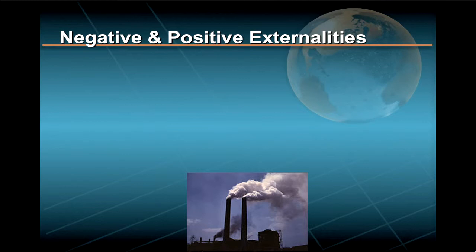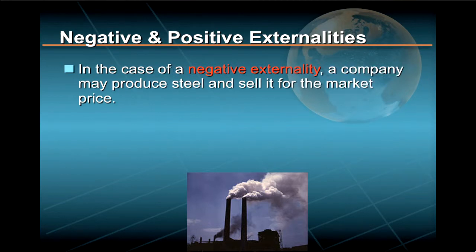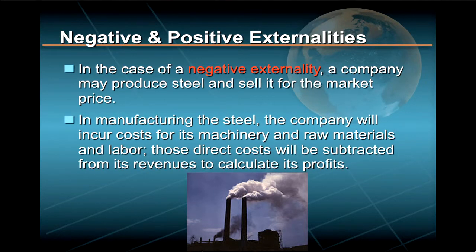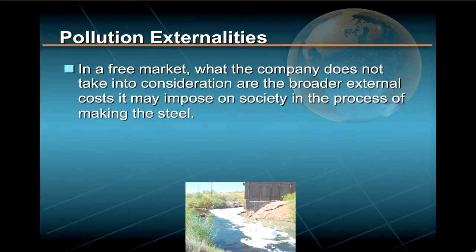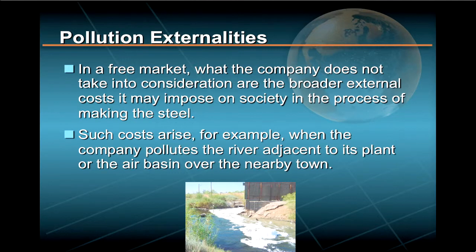A second type of market failure involves negative externalities and positive externalities. In the case of a negative externality, a company may produce steel and sell it for the market price. In manufacturing the steel, the company will incur costs for its machinery and raw materials and labor, and those direct costs to the firm will be subtracted from its revenues to calculate its profits. However, in a free market, what the company does not take into consideration are the broader external costs it may impose on society in the process of making the steel — for example, when the company pollutes the river adjacent to its plant or the air basin over the nearby town.